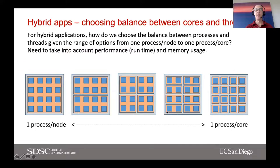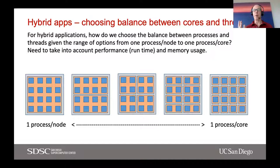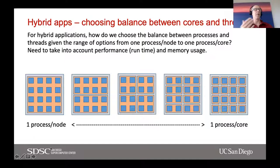Here's where it gets more complicated. You can do anything in between — from one process per node with threads equal to the number of cores, all the way to one process per core. The question is how many processes you should use. It's highly application- and problem-dependent, and the only way to figure it out is to benchmark it — run a small problem using different configurations. The Expanse user guide and user guides at other major supercomputer centers explain how to run hybrid applications.